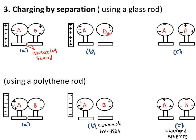When sphere B is separated and the rod completely removed, the negative charges in sphere A redistribute due to repulsion. Sphere B's positive charges also redistribute due to repulsion. When you bring a glass rod close to sphere A it is attracted, but it is repelled by sphere B — showing that sphere B is positively charged while sphere A is negatively charged, because attraction occurs between unlike charges and repulsion between like charges.